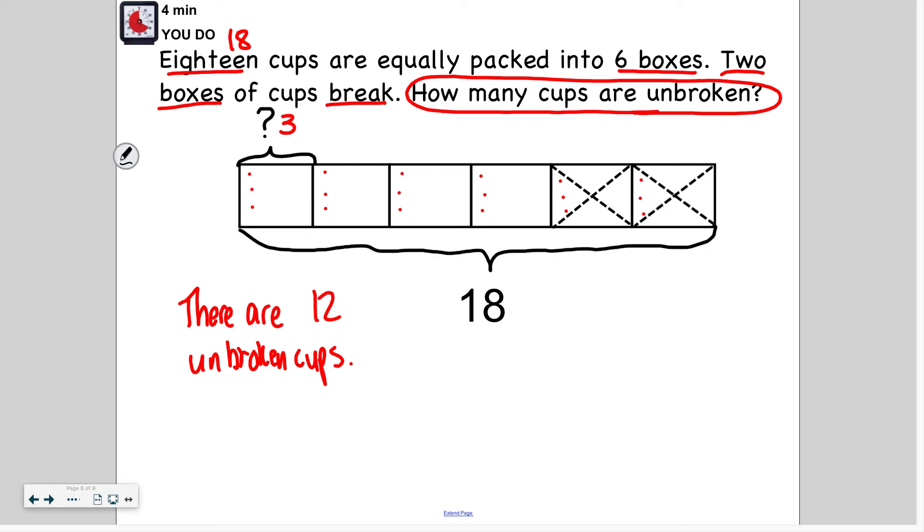To recap, first we had to find out how many cups go in each box. Then take away those two boxes that broke because we can't use those cups anymore, leaving us with 12 unbroken cups. Thanks for watching. You can reach out to me on Schoology or Google Hangouts if you have any questions. Remember, today's word problems will always have two steps. Make sure you've done two steps to get to your answer, or you may have missed something and might have an incorrect answer.